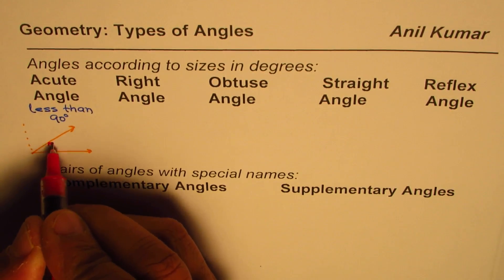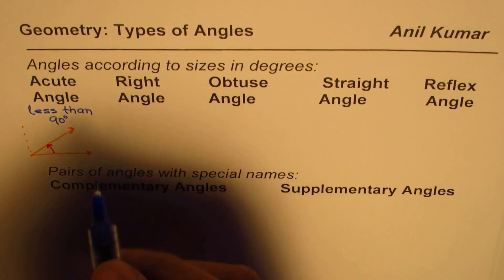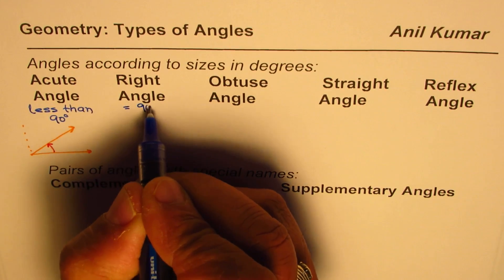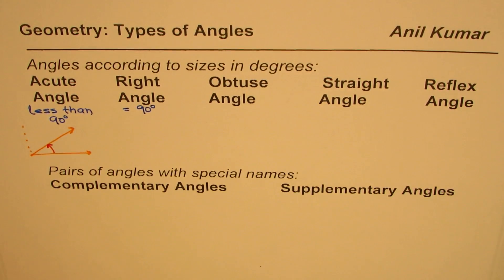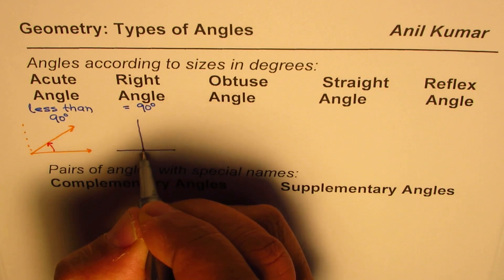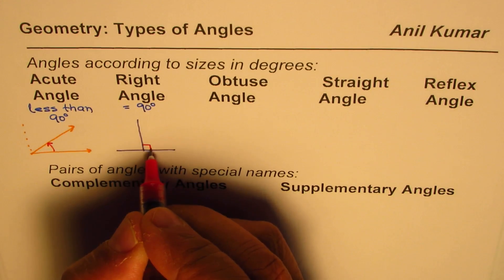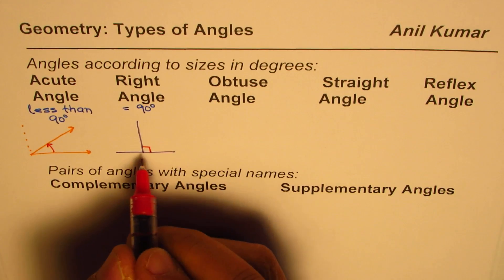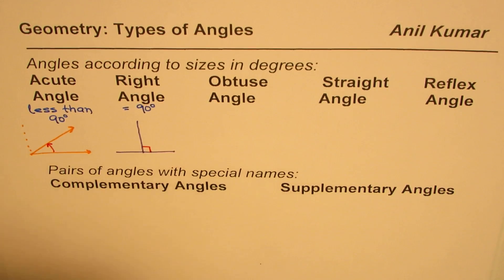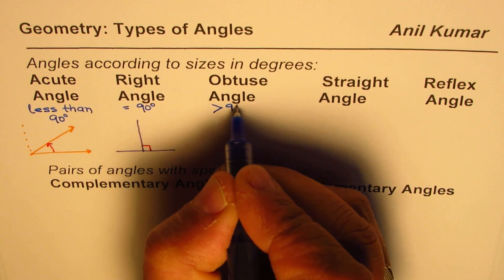What is a right angle? As the name suggests, it is equal to 90 degrees. We could have a straight line and a perpendicular — the perpendicular forms 90 degrees. That angle is the 90-degree angle and it is normally shown with a small square symbol.